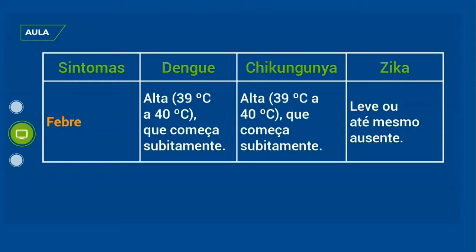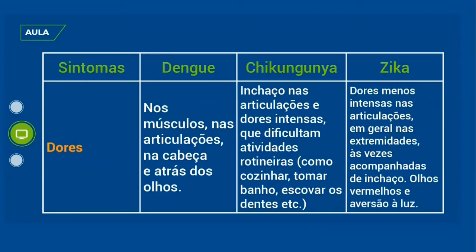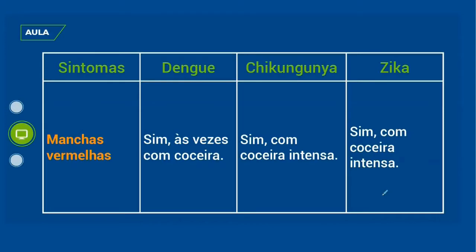Para comparar dengue, Chikungunya e Zika: a Chikungunya também tem como intermediário o Aedes aegypti. Temos febre alta na dengue e na Chikungunya; na Zika pode não haver febre. Dores na dengue incluem dores nos músculos, articulação e atrás dos olhos. Na Chikungunya, dores intensas que dificultam atividades como cozinhar, tomar banho e escovar os dentes. Na Zika, dores intensas nas articulações com inchaço, olhos vermelhos e aversão à luz — fotofobia. Manchas vermelhas na dengue podem ter coceira; na Chikungunya e Zika, a coceira é intensa.